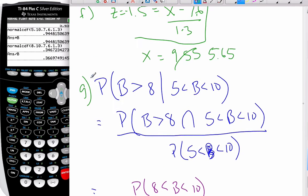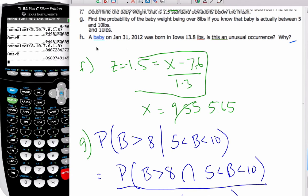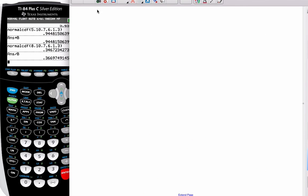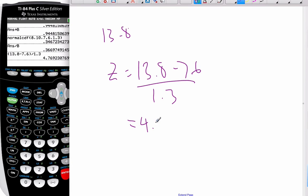Finally, part H. A baby was born on this day, and this is true, in Iowa, 13.8 pounds. Is this an unusual occurrence? If it's 13.8 pounds, let's find the Z-score. The Z-score is 13.8 minus 7.6 over 1.3. If I do this calculation, it is a Z-score of 4.8 approximately.